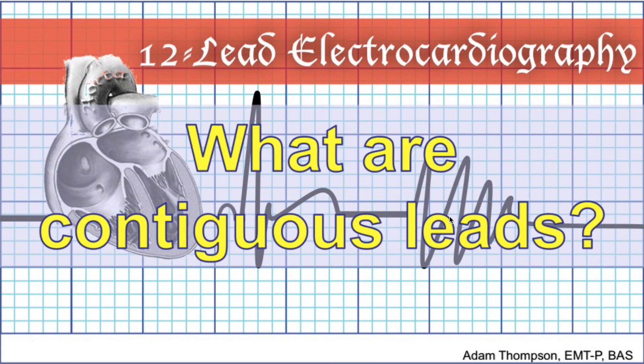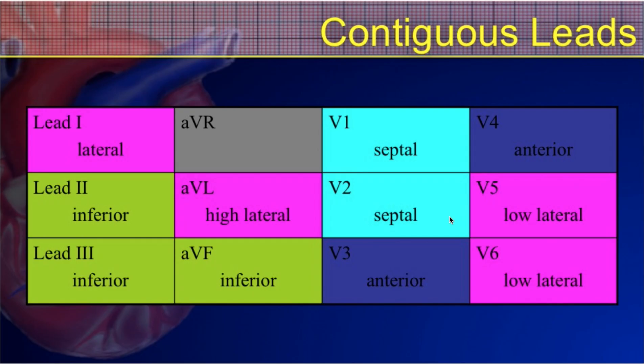I'm Adam Thompson, and in this presentation we're going to talk about contiguous leads. So what are contiguous leads when it comes to 12-lead ECG interpretation? You need to understand what contiguous leads are because a lot of the STEMI criteria — the criteria where you try to determine if somebody's having an acute myocardial infarction based on a 12-lead ECG — requires certain findings in contiguous leads. Quite simply, contiguous leads are leads that look at the same area of the heart on a 12-lead ECG.